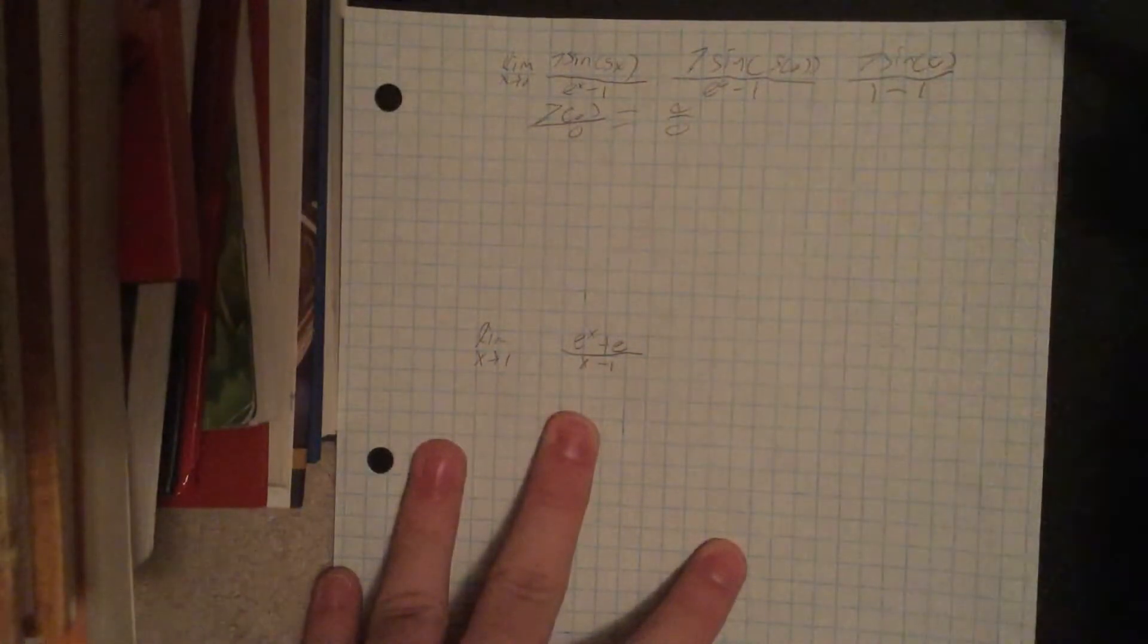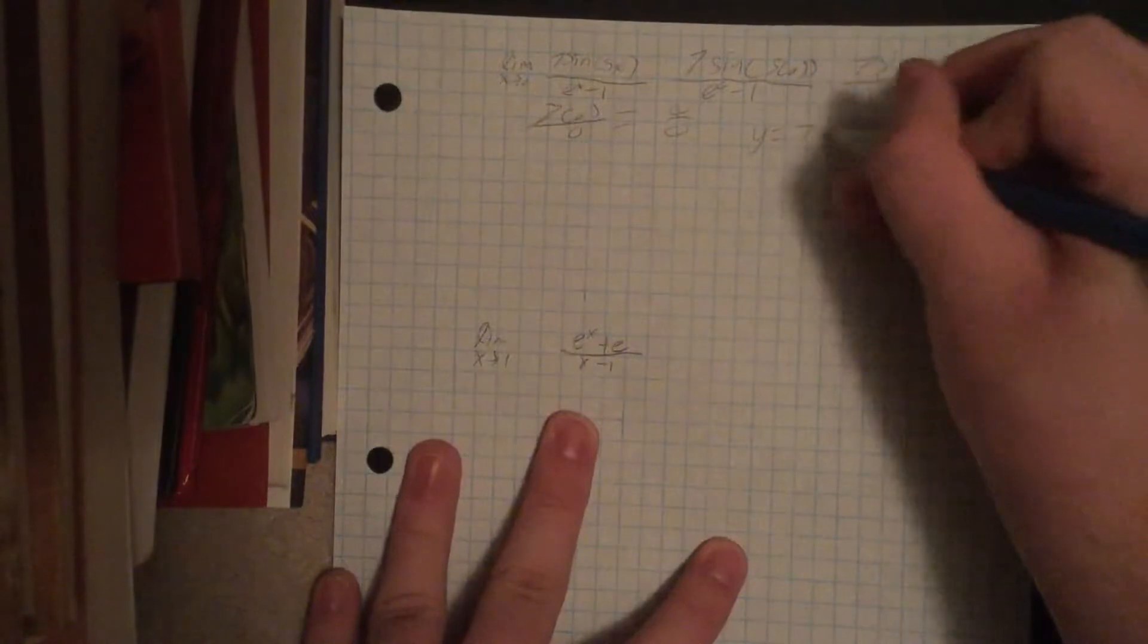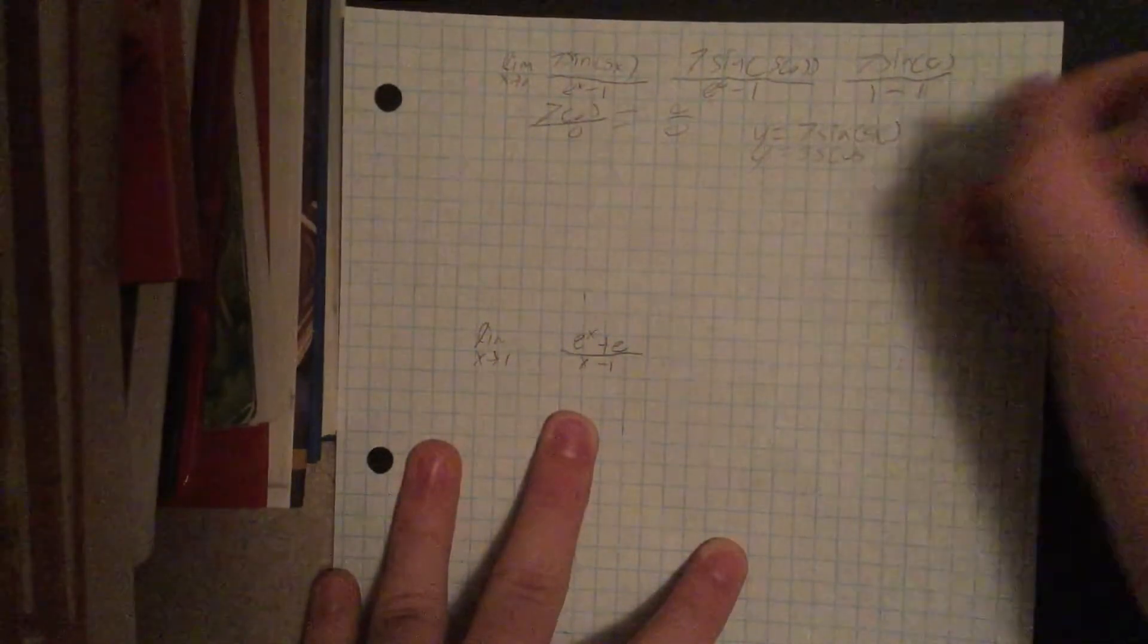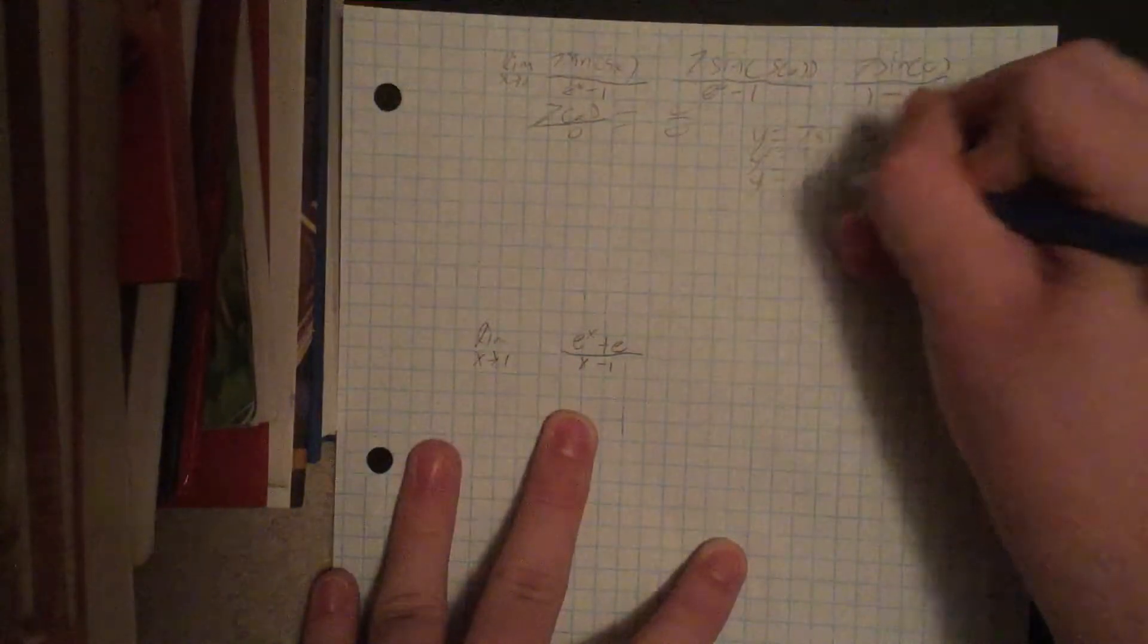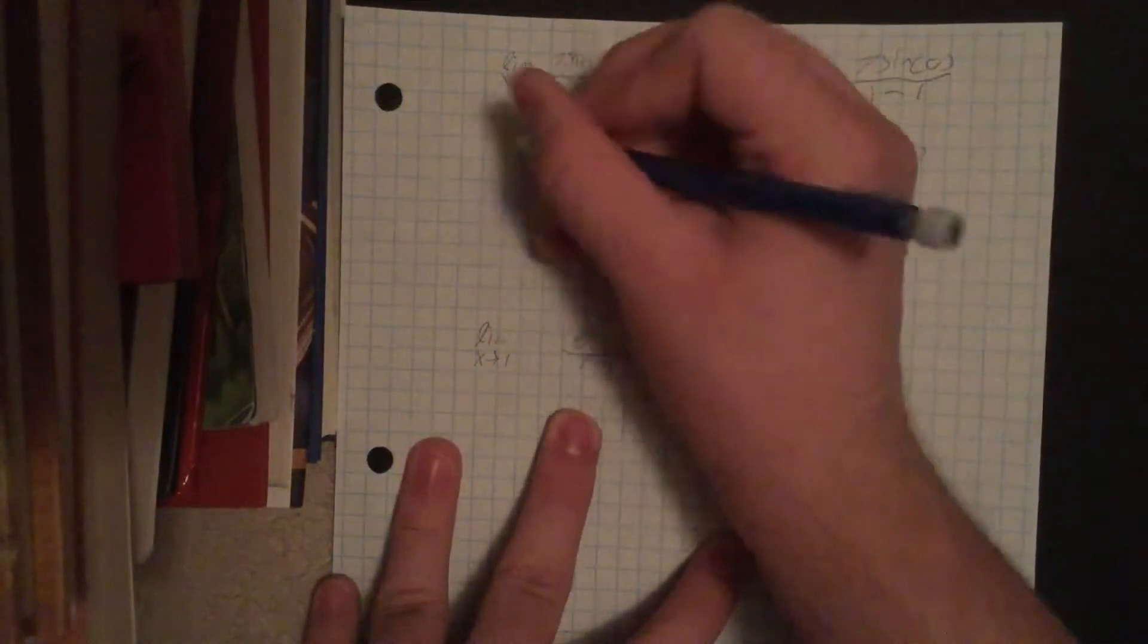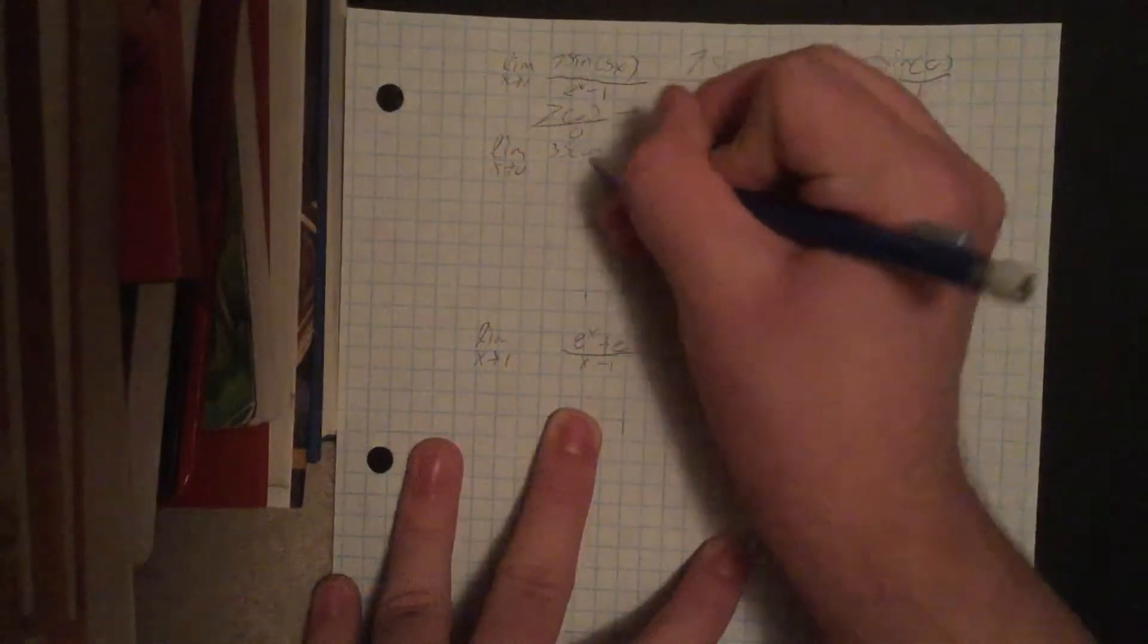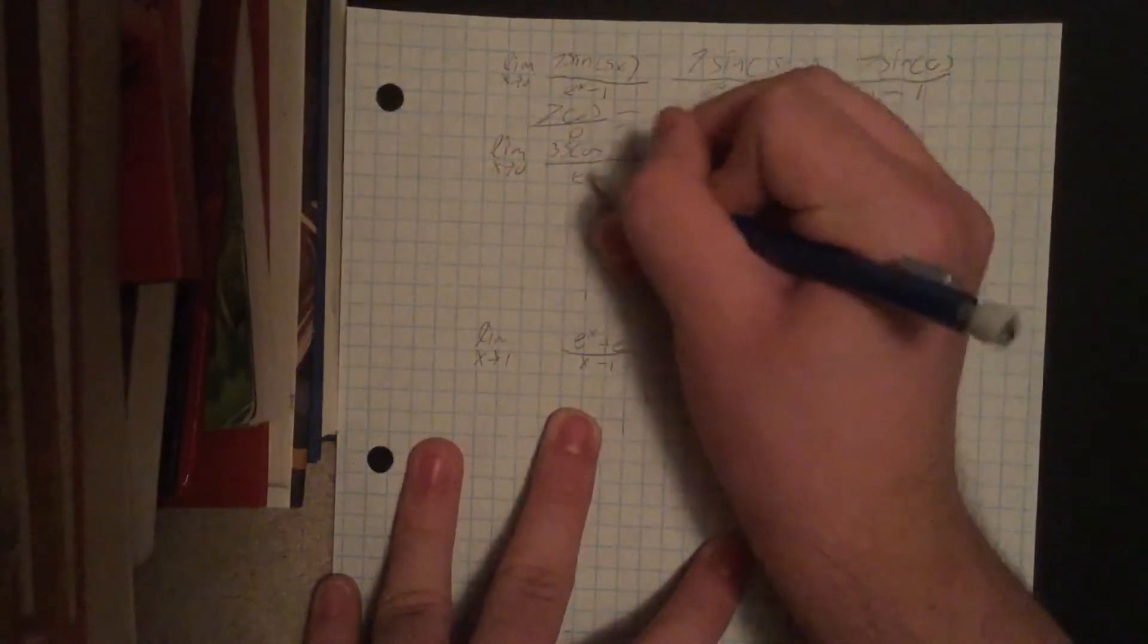So for Lope-Tol's rule, we take the derivative of the top over the derivative of the bottom. So we'll do the derivative of the top. So it's 7 sine of 5x. So that's going to get us 35 cosine of 5x. And then the derivative of the bottom, so e to the x minus 1, which will get us the derivative of e to the x. And we plug that in. So the limit as x approaches 0 of 35 cosine of 5x over e to the x.